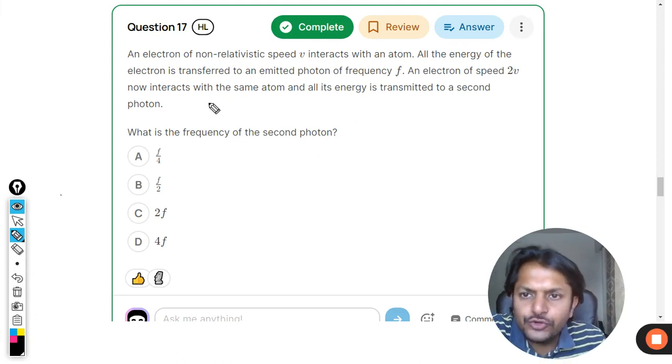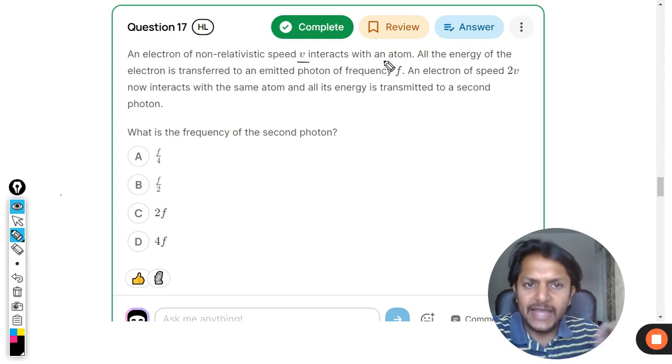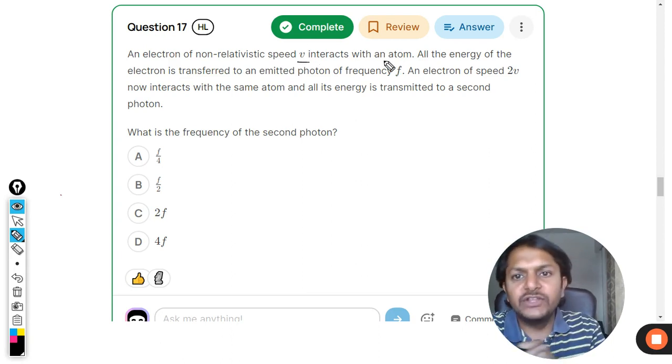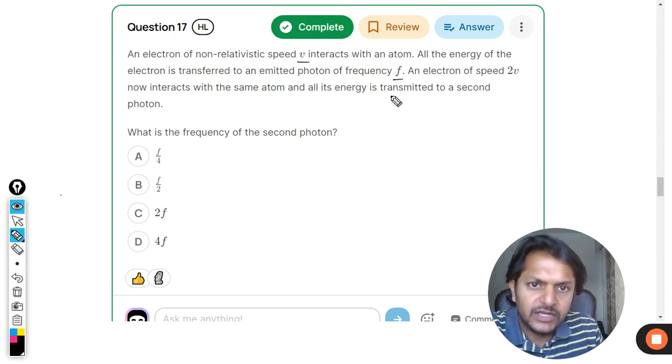Okay dear student, let us see what is there in this question. An electron of non-relativistic speed v interacts with an atom. All the energy of the electron is transferred to an emitted photon of frequency f. An electron of speed 2v now interacts with the same atom and all its energy is transmitted to a second photon. What is the frequency of the second photon?